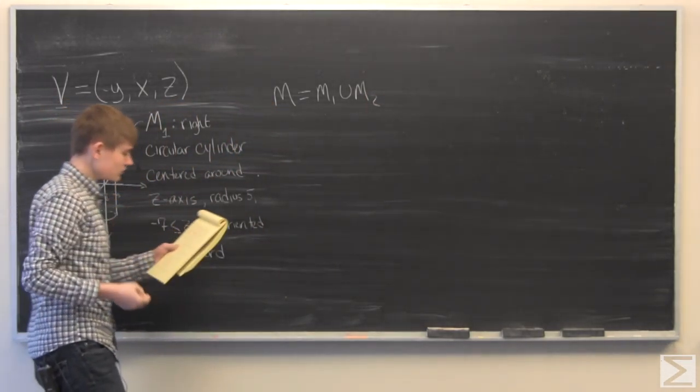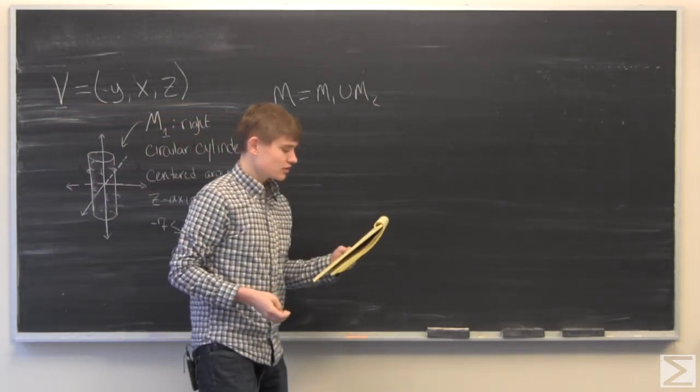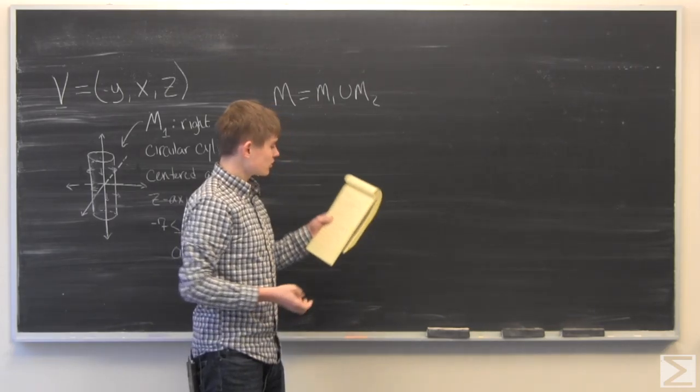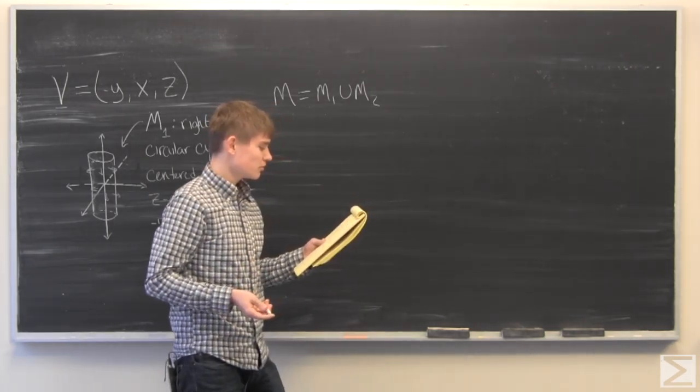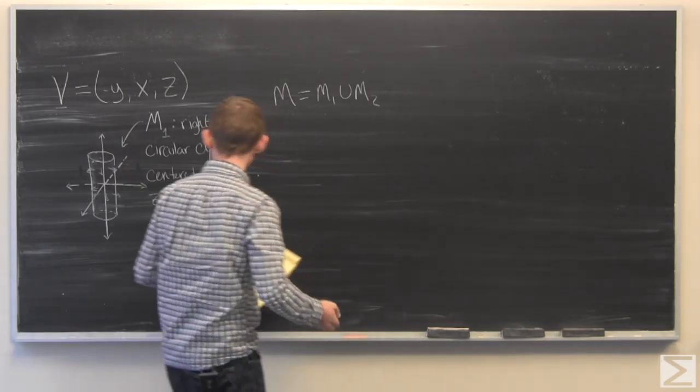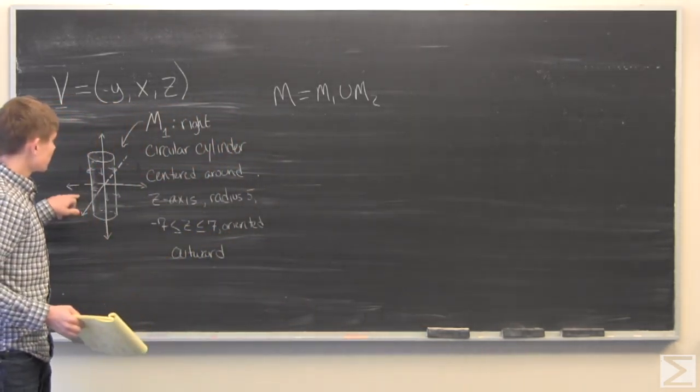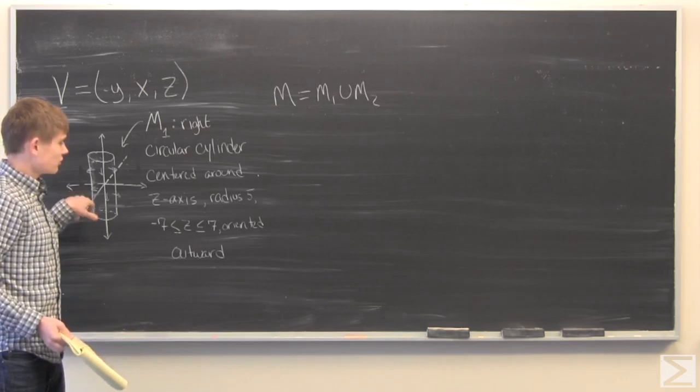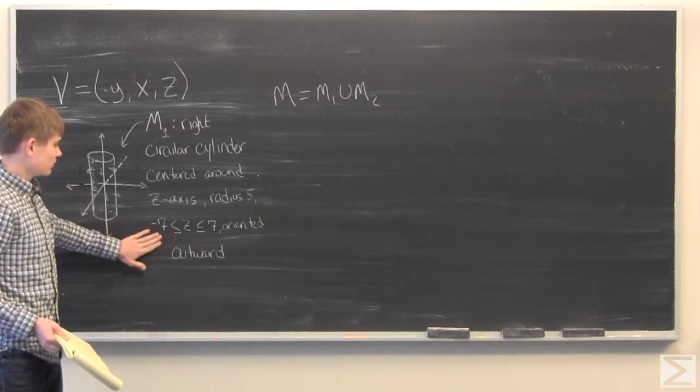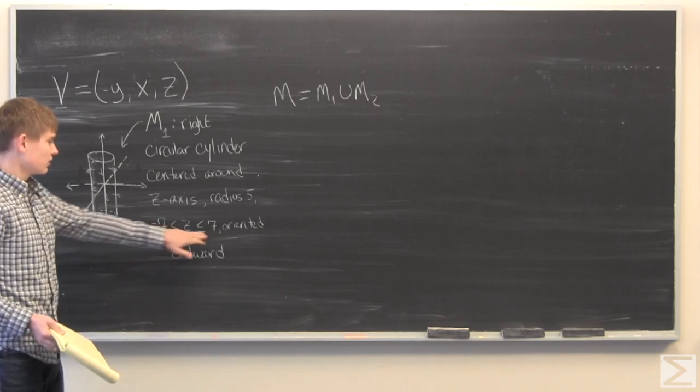Where this is M1. So find a convenient closing surface M2 such that M is a closed, compact, piecewise regular surface with a standard outward pointing orientation. Since our surface M1 is a right circular cylinder centered around the Z axis with radius 5 between Z equal to negative 7 and 7.